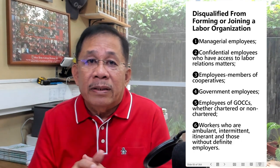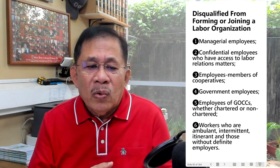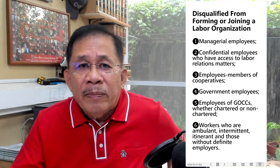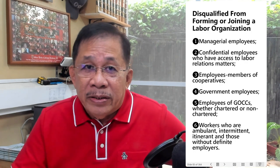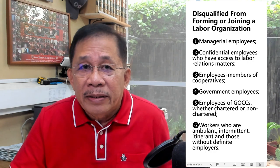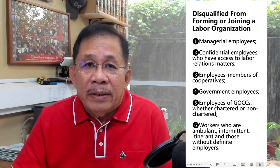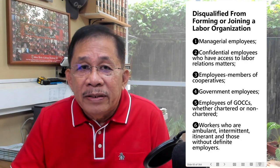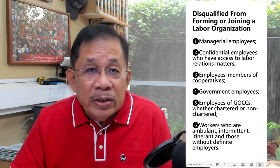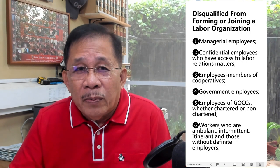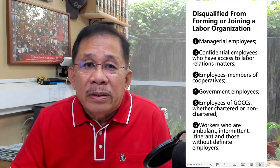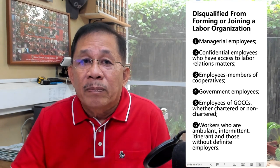Who are disqualified from forming or joining a labor organization? First are managerial employees. Second are confidential employees who have access to labor relations information. Third are employees who are members of cooperatives. Fourth are government employees. Fifth are employees of government-owned or controlled corporations, whether chartered or non-chartered, ambulant workers, or those without definite employers.